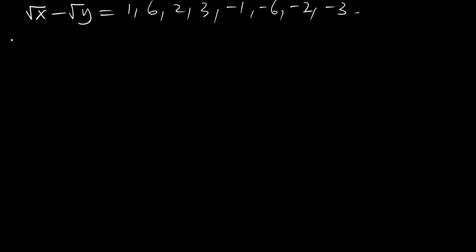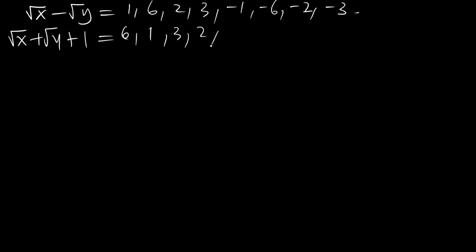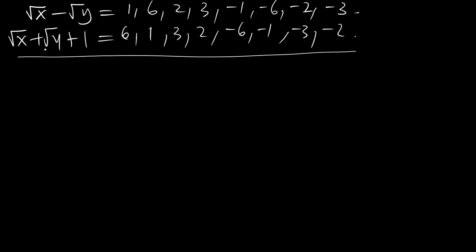So you now have the square root of x minus the square root of y equal to 1 and 3 and 2 and minus 6 and minus 1 and minus 3 and minus 2. Let's call this equation 3 and equation 4.